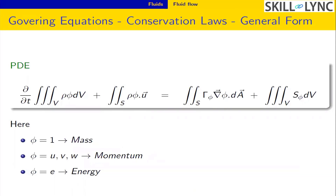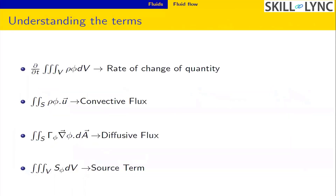The first term with d/dt represents the rate of change of a quantity. The surface integral term with density is the convective flux, and with gradients it is the diffusive flux. If something needs to be added or removed from the system, we do it via source terms. This is the basic structure of CFD.